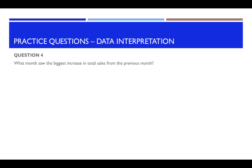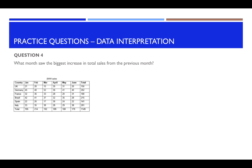Question four. What month saw the biggest increase in total sales from the previous month? So there's your diagram. So we're looking at the biggest increase in total sales from the previous month. So we're looking at these columns down this way. We're not looking at the rows. So let's focus on this. And we're looking for the biggest increase from the previous month.